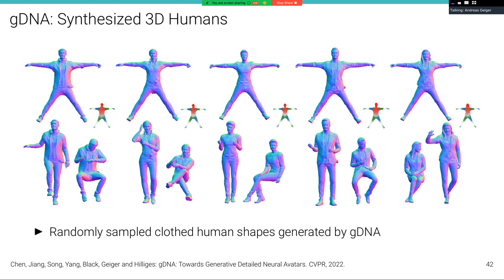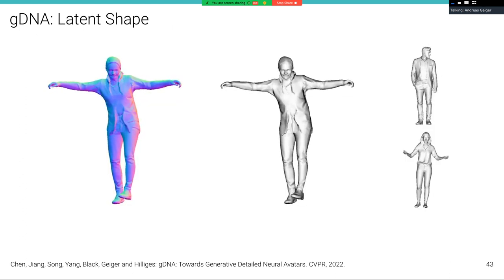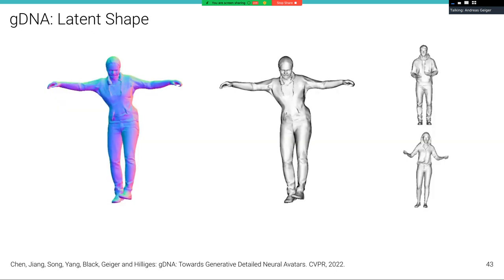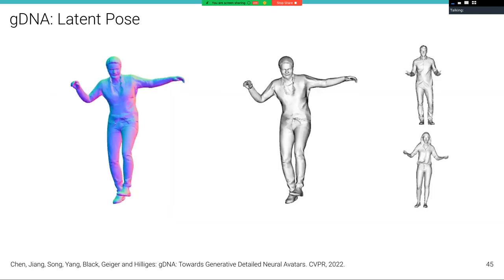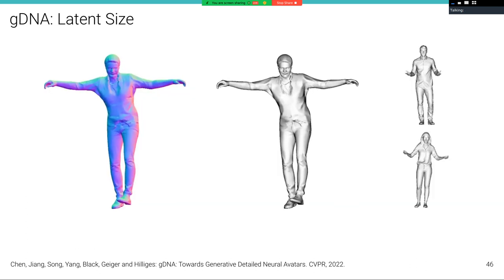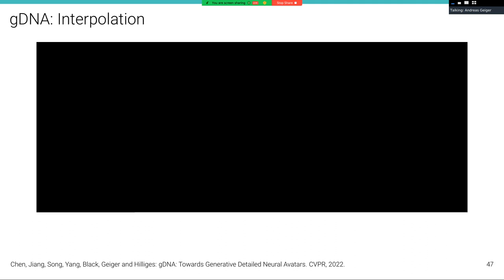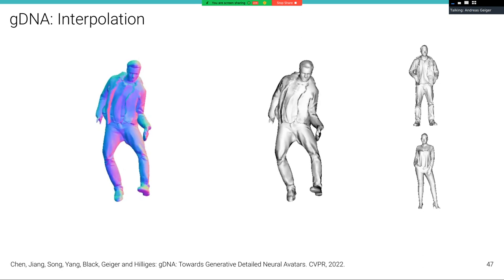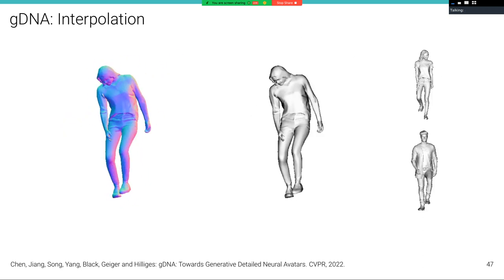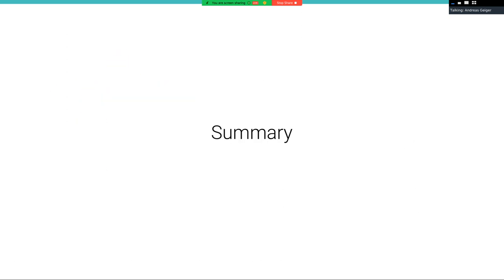So here are some results. These are random samples of clothed human shapes generated by gDNA. And as you can see, both the gender and also the shape varies significantly. We can now also model the individual factors that have been disentangled by our model. So we can visualize them individually. So here you see, for example, how the shape changes. And this is the latent for details, which modifies the little wrinkles on the cloth, for example. This is the pose variable, which allows us to animate the character. And this is the size variable, which allows us to modify the size of the character. And finally, we can of course also interpolate between different characters and modify multiple of these latent factors at once.